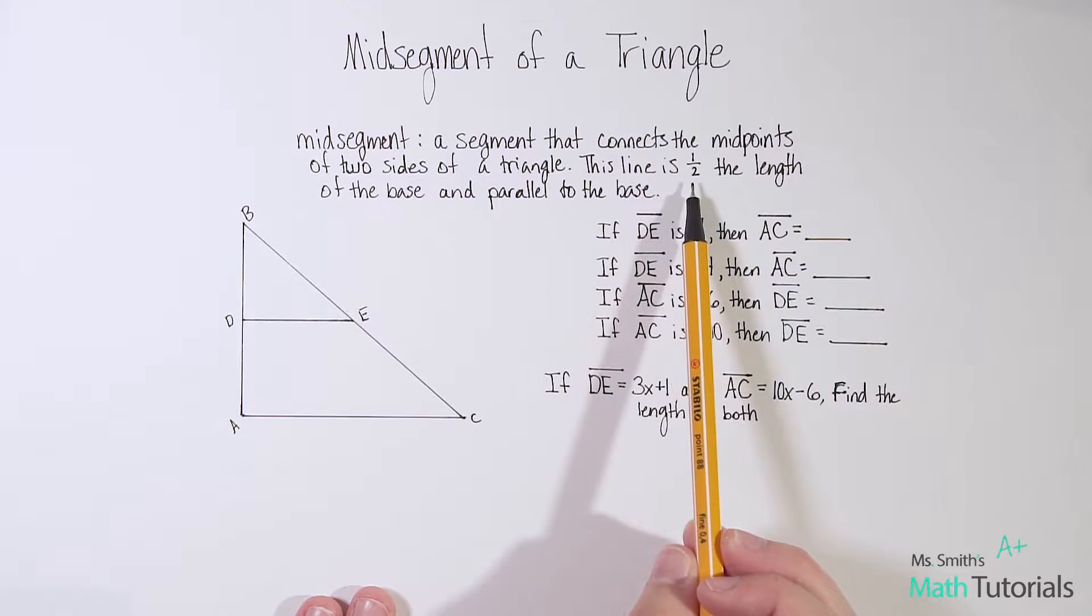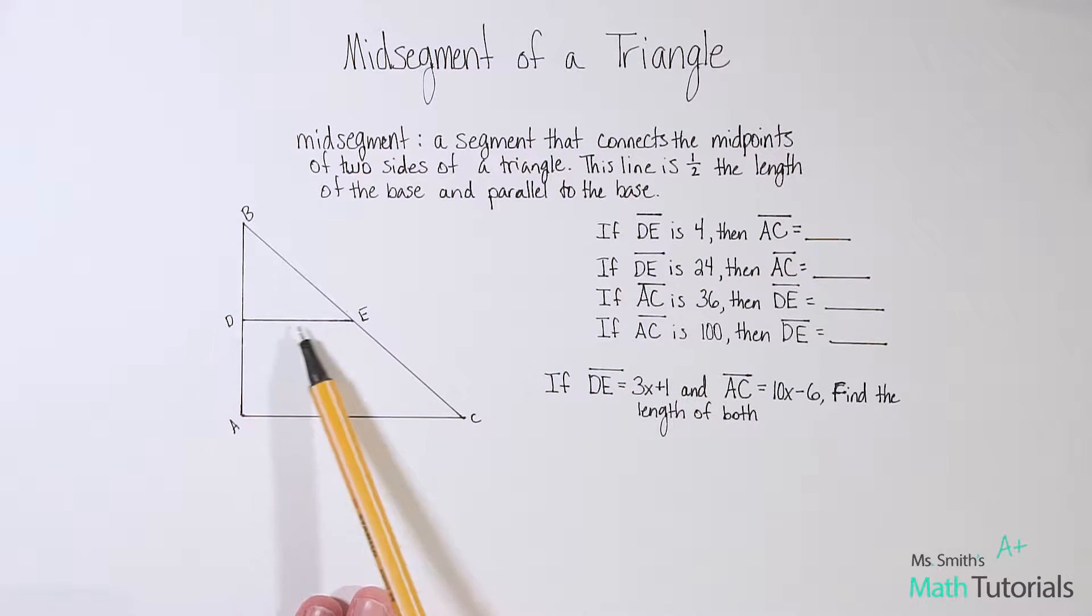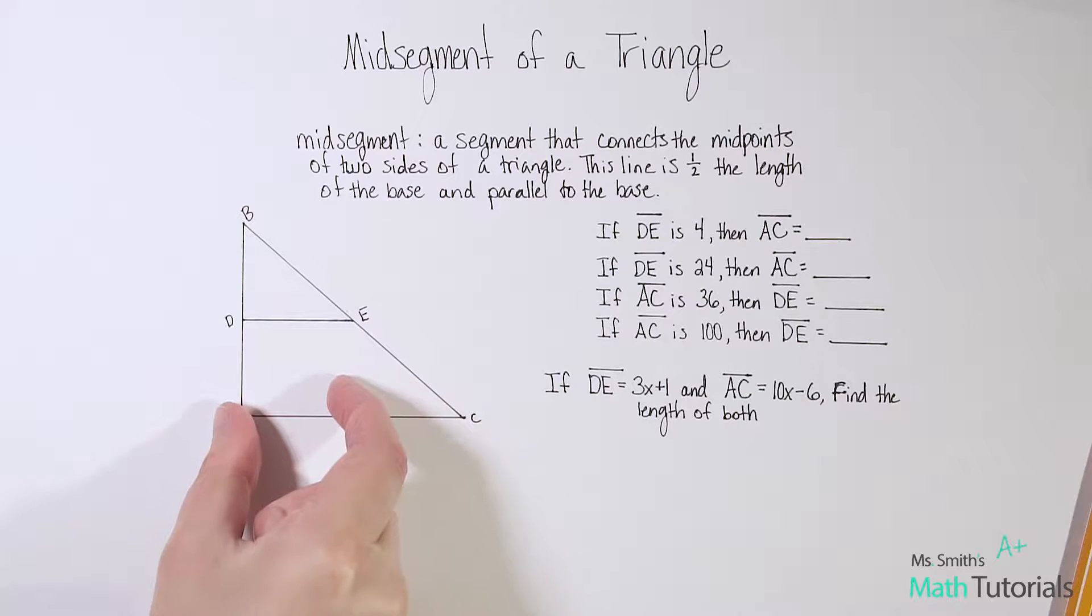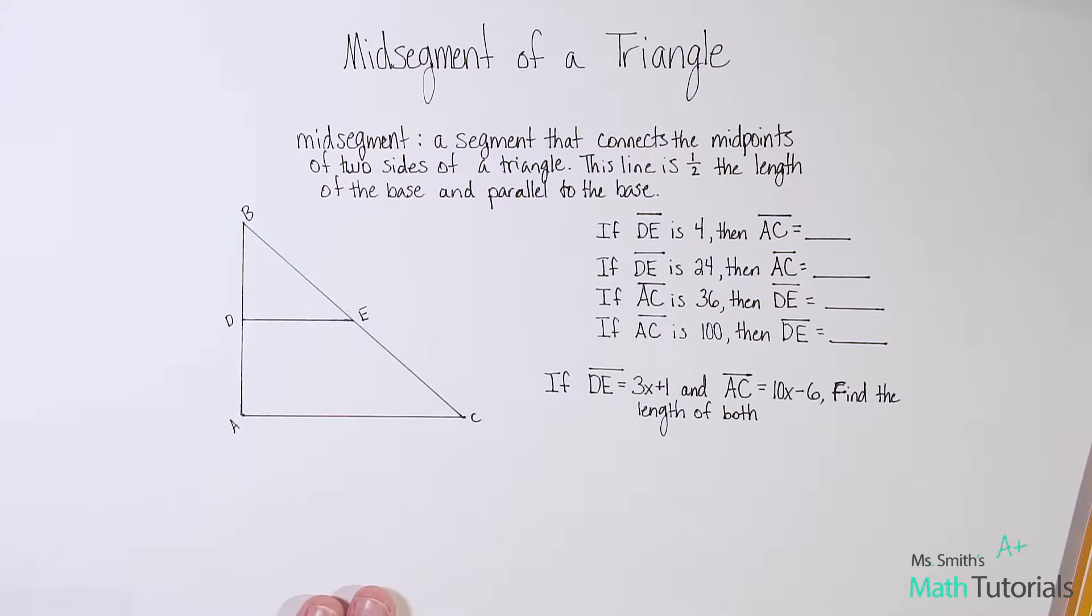So this line is one-half the length of the base and parallel to the base. So DE is always going to be, if it is a true mid-segment, it will be parallel to whatever the base is. So in this case, AC. And it's also one-half the length. So this is one-half of the base. So this times two gives me the bottom.